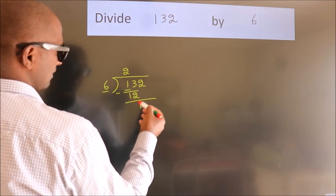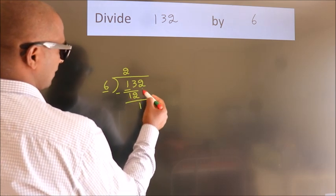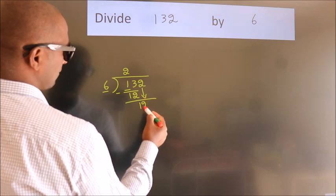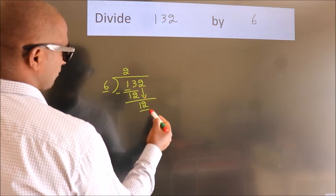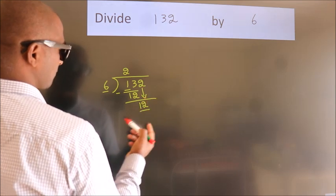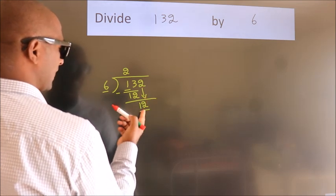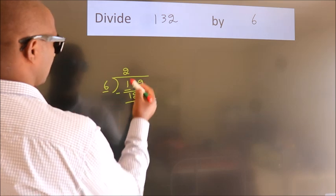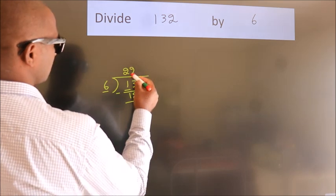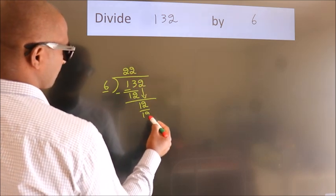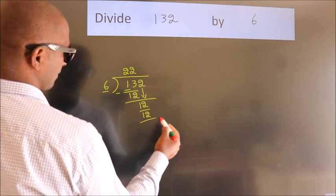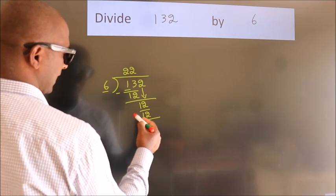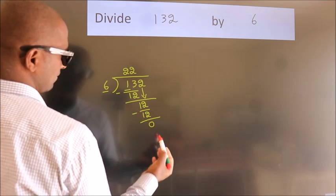After this, bring down the beside number. So, 2 comes down, giving us 12. When do we get 12 in the 6 table? 6 twos are 12. Now we subtract and we get 0.